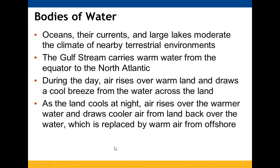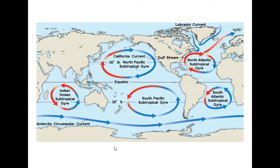When wind patterns change, ocean currents are affected. Oceans and large lakes moderate the climate of nearby terrestrial environments — that's why there's less snow and freezing rain closer to the oceans. The Gulf Stream carries warm water from the equator to the North Atlantic. During the day, air rises over warm land, drawing in cool breezes from the water. At night, as land cools, air rises over the warmer water, drawing cooler air from land back offshore, replaced by warm air from offshore.